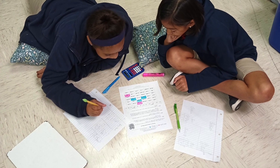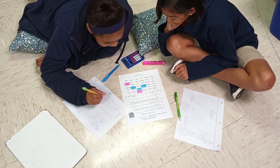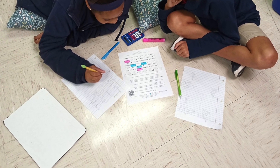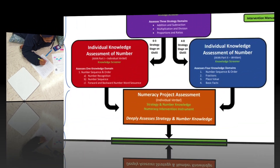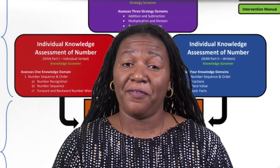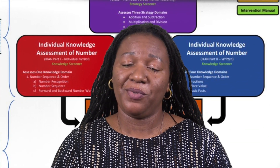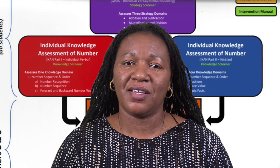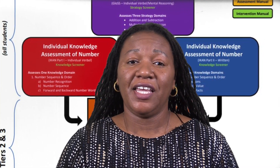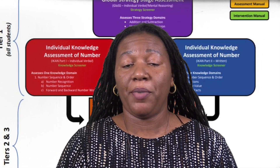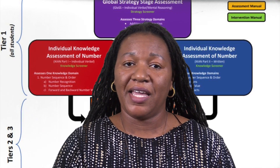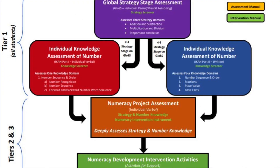The second component of the universal screener is broken into two parts. Depending upon the strategy stage determined by the first assessment — the GLOSS — the student will either take the Individual Knowledge Assessment of Number part one, or the IKAN part two.